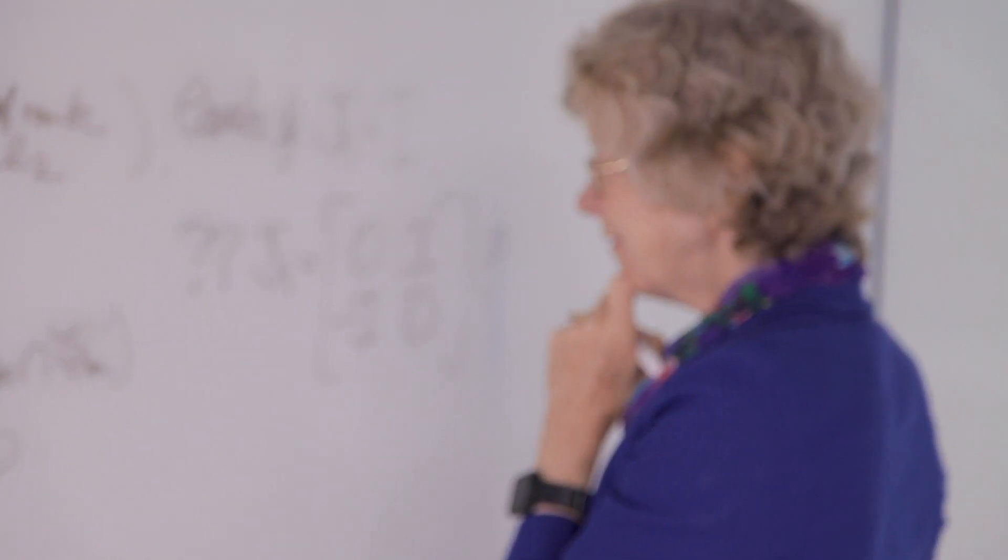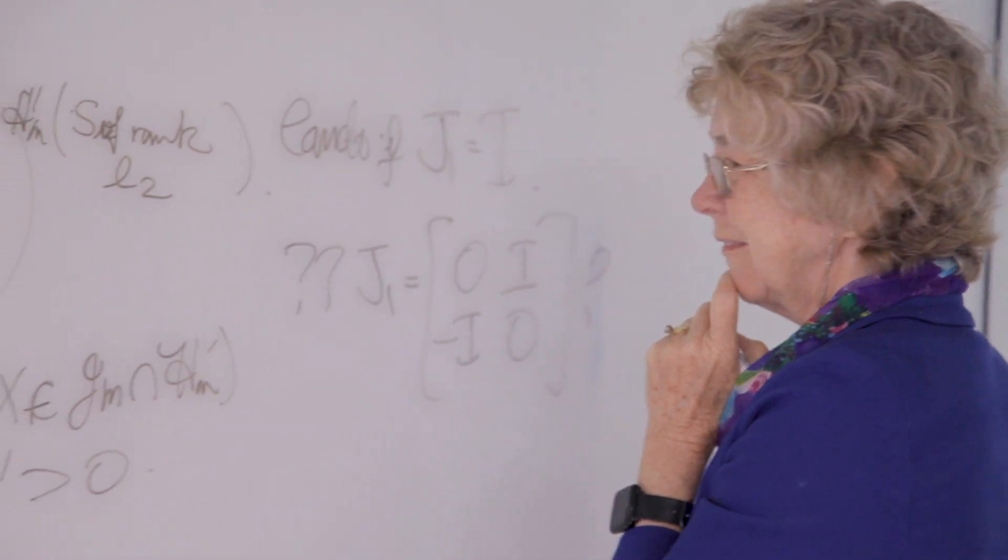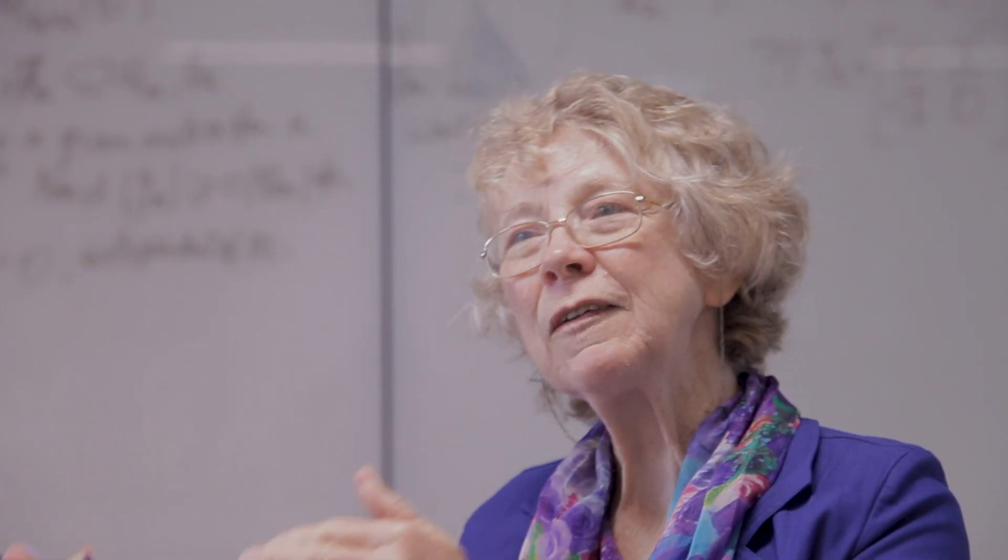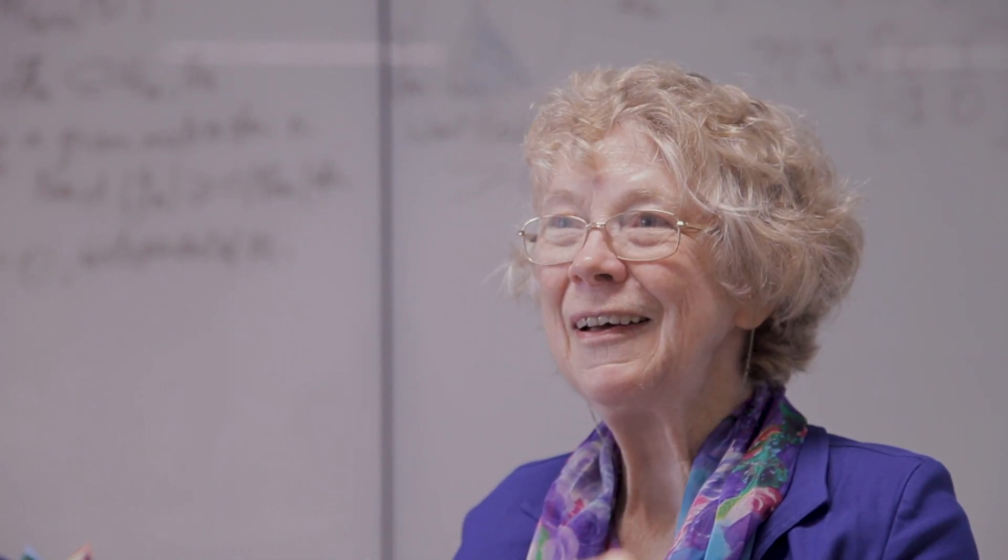So we used group theory to give a precise count, and then the computer scientists could use this guaranteed number to work out whether they'd enumerated all of them or not.